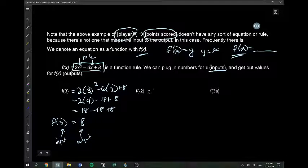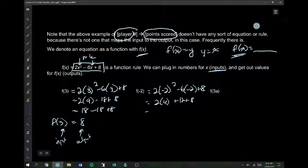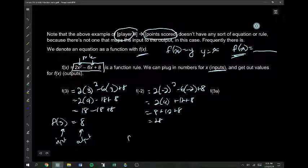We can do it again. f of negative 2 means I'm going to plug in negative 2 for x. Negative 2 squared is 4. So, I get 8 plus 12 plus 8, which is 28. My input was negative 2. My output was 28.